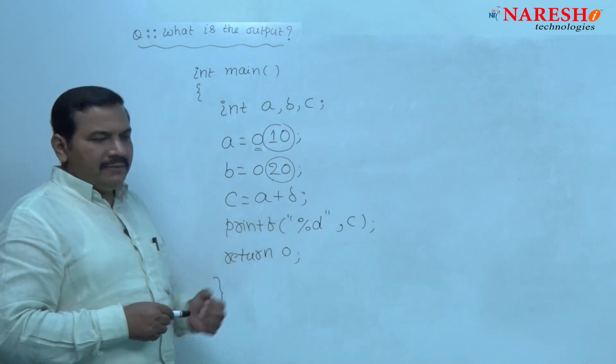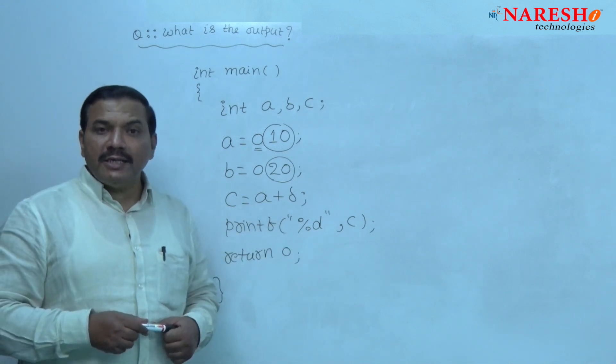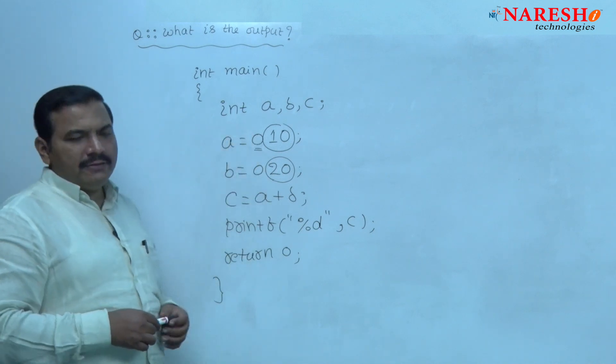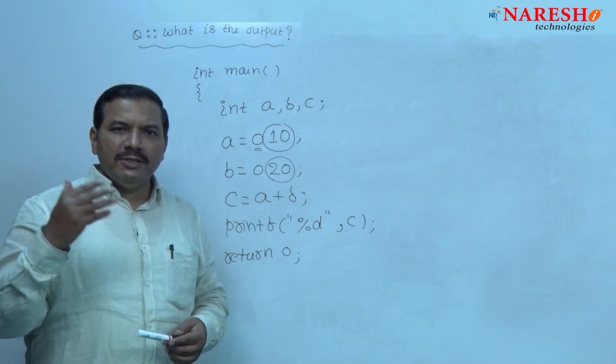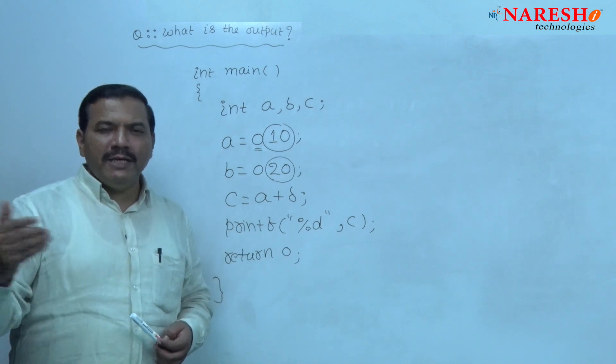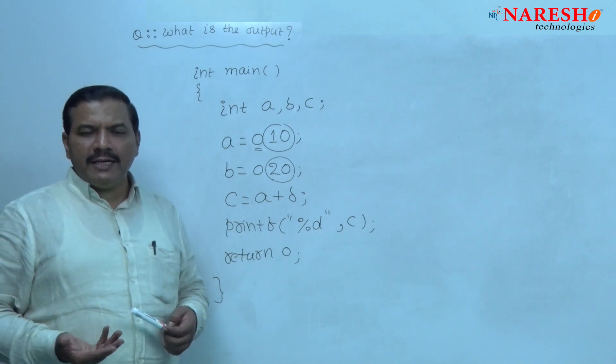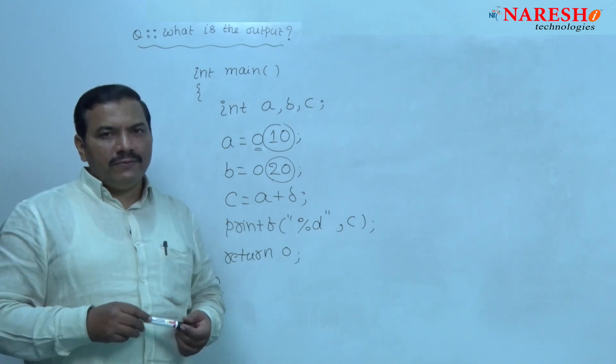As I given the format code percent d, hence better to convert these octal integers in the format of decimal integers and then add. After addition, what is the value we are getting? That is the output of this code.